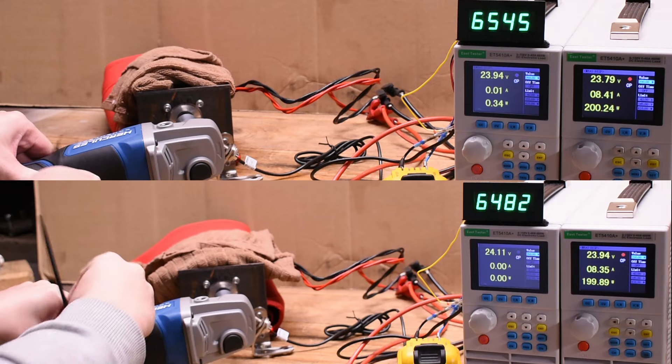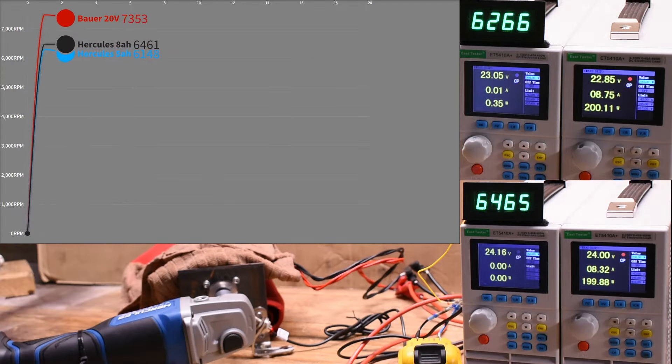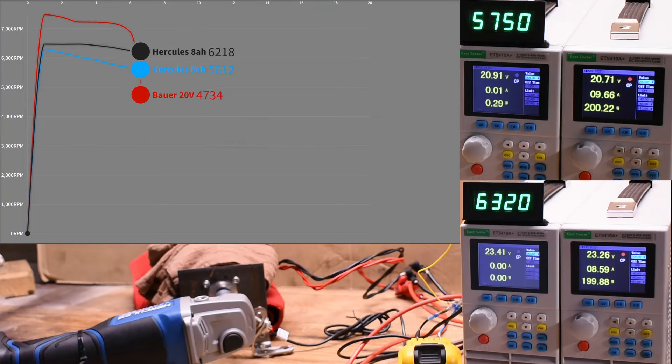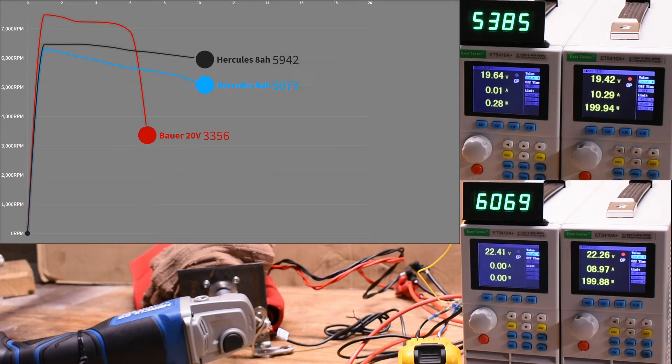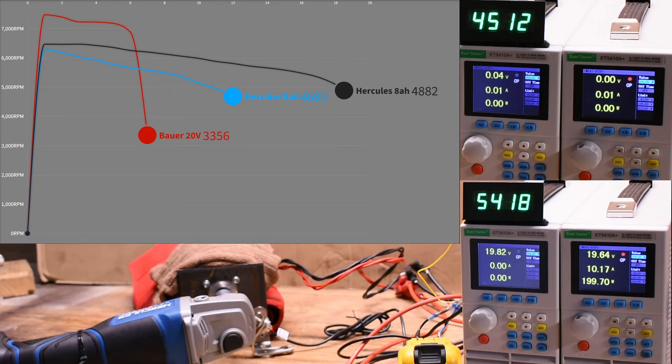The biggest improvement though we see is run time. Here's the 5 amp hour on top and 8 amp hour on bottom, both on the graph. The Hercules with the same 5 amp hour capacity as the Bauer makes it up to a full 12 minutes of run time under that 200 watt medium low-ish type grinding task level, which is well above the seven minutes the Bauer made. And the 8 amp hour extreme makes it to 19.5 minutes. Getting 20 minutes out of one of these tools I think is decent. The last cordless I personally used lasted about 8 to 10 minutes on a 5 amp hour, which was kind of annoying.